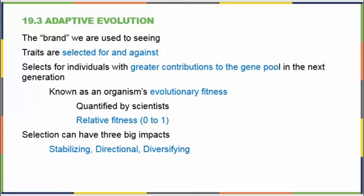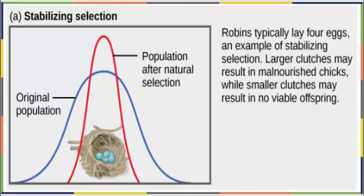Individuals have a relative fitness on a scale from zero, being not at all fit, not producing any viable offspring, to one, producing the maximum amount of viable offspring that you can. Adaptive evolution, leading more fit individuals to make greater contributions to the gene pool, can have three really big impacts on a population. It can stabilize it, it can push it in a certain direction, or it can diversify it.